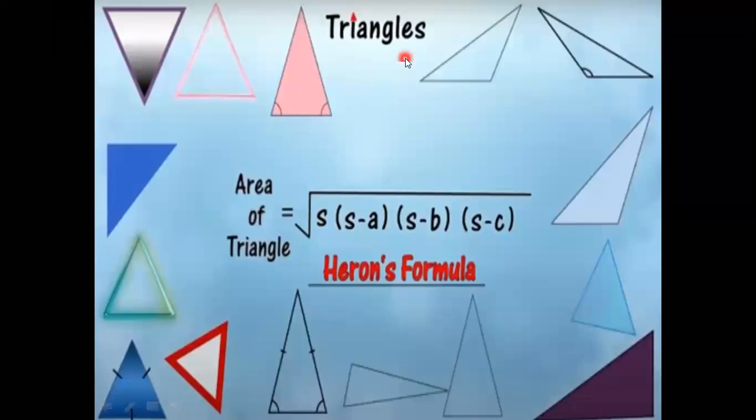Now, according to Heron's Formula, the area of a triangle can be found by the formula: under root S into S minus A into S minus B into S minus C.